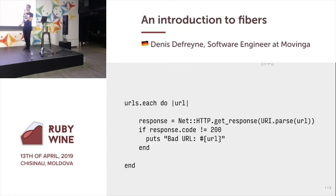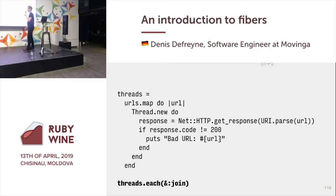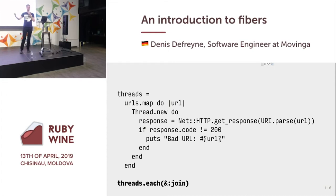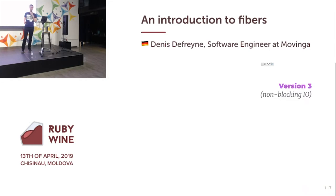With threads, we wrap the handling of each URL in a Thread.new block. We collect all those threads, then call join on each of them so we wait for all threads to finish before exiting. This version is quite a bit faster — instead of taking 60 seconds, it now takes about one second because everything runs in parallel. I have a third version which uses non-blocking I/O and fibers.